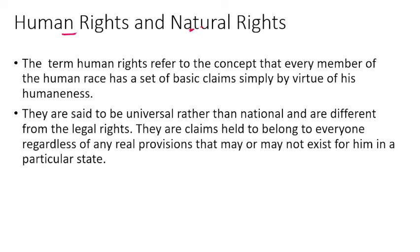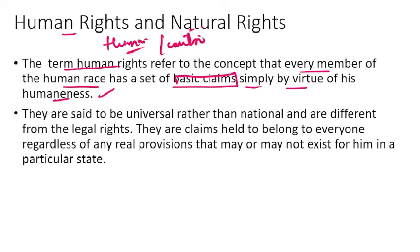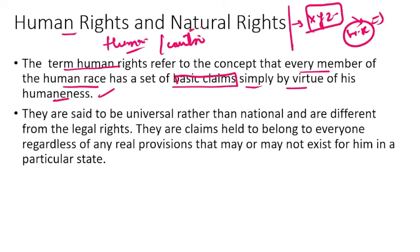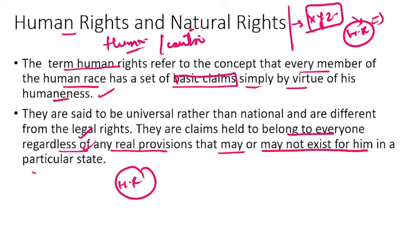Human rights and natural rights — the term 'human rights' refers to the concept that every member of the human race has some basic claims simply by virtue of their humanness. These are claims held to belong to everyone, regardless of any real provisions that may or may not exist in a particular state. In the early centuries, these rights were commonly spoken of as natural rights and rights of man, and gradually they became transformed into human rights.